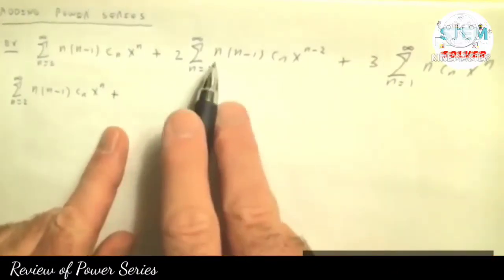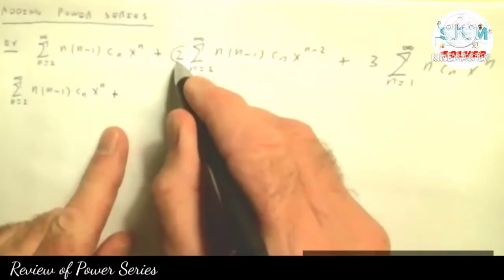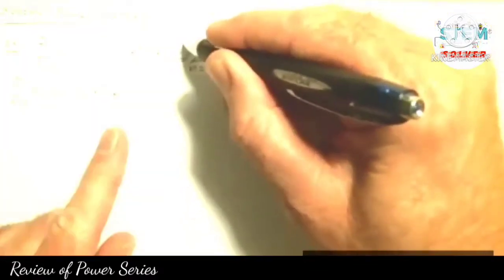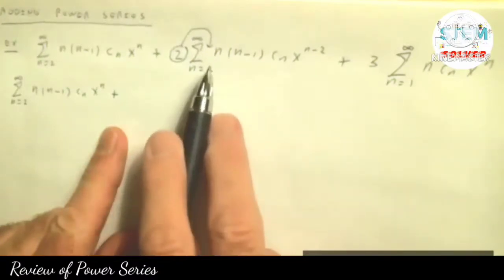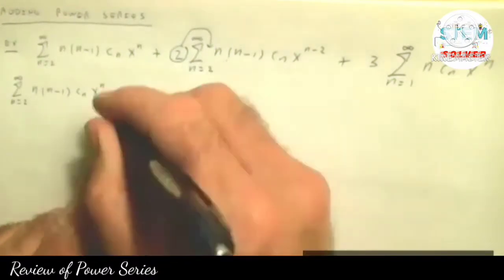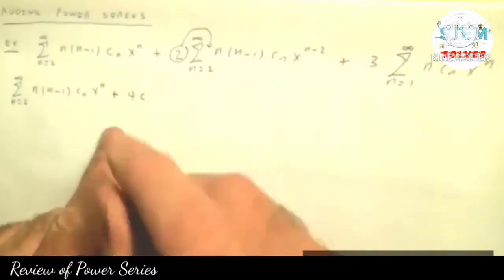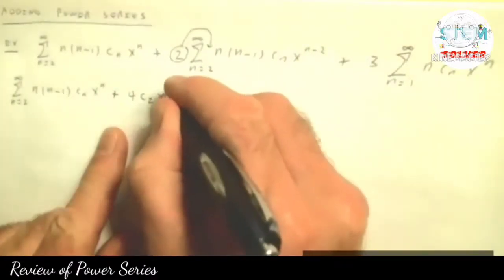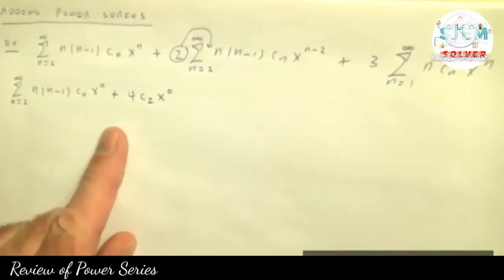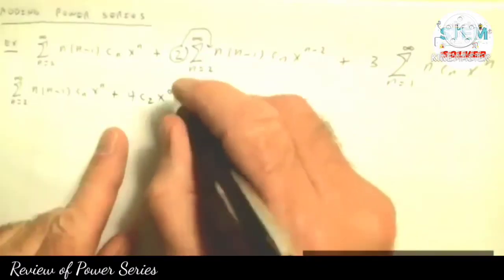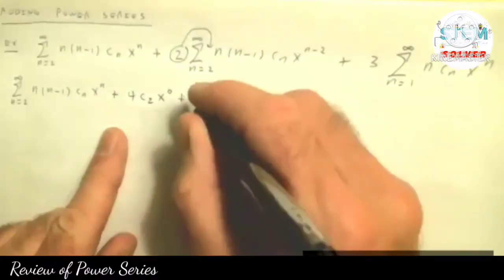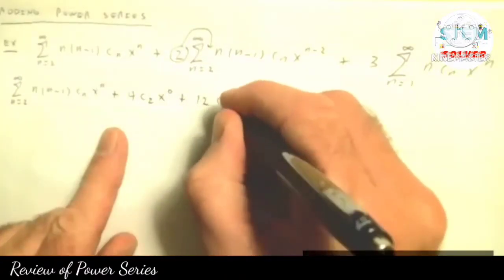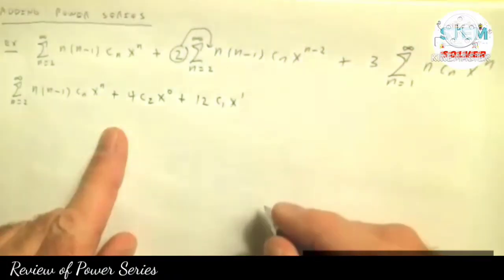So what you're going to do is plug in n equal 2, and don't forget there is a 2 out front. I'll often write it on the inside because it's easier to see. If I plug in 2, I'm going to get 4 c sub 2, x to the 0 — I'll just leave it as 1, but for now I'll leave it there. We're going to have one more term, so I'm going to plug in 3. 3 times 2 is 6, times 2 is 12. We'll get 12 c₃ x to the 1st power.